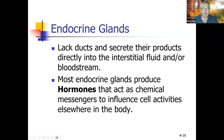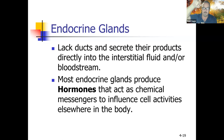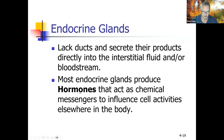Endocrine glands don't have ducts because they dump their material directly into the blood. A duct is a tube that leads from the gland up to the surface. Since endocrine glands dump directly into the bloodstream, they don't need that. Most endocrine glands produce hormones — chemical messengers that influence cell activities elsewhere in the body, such as testosterone and estrogen.